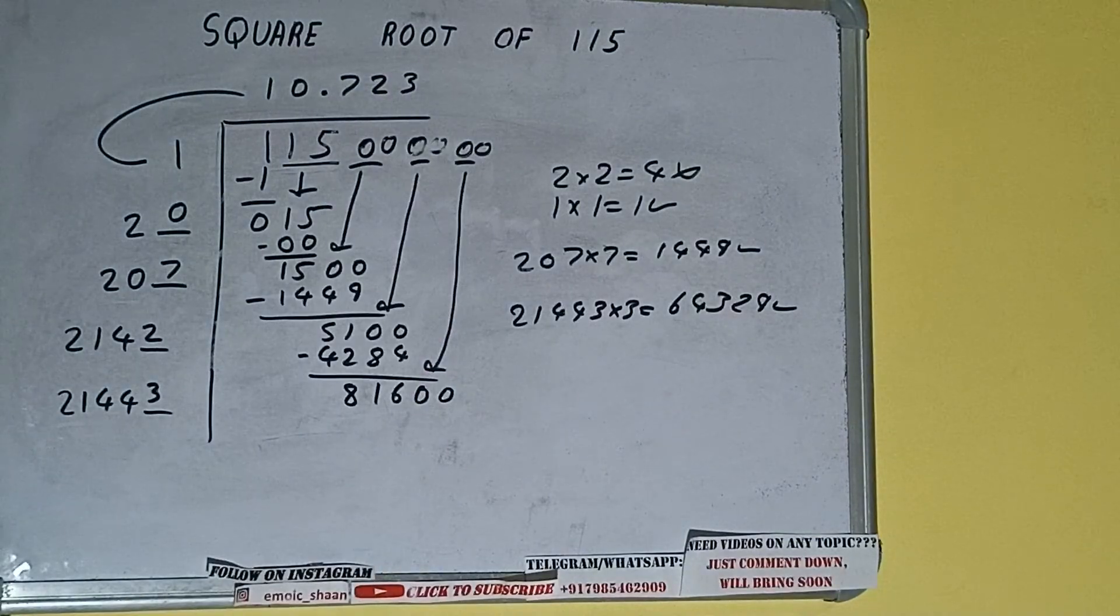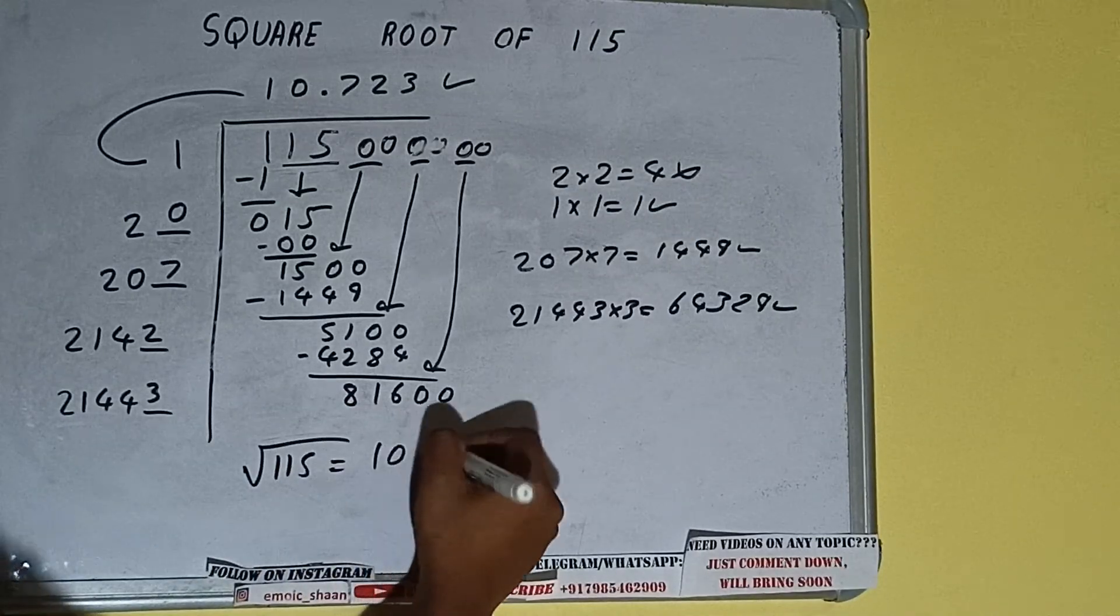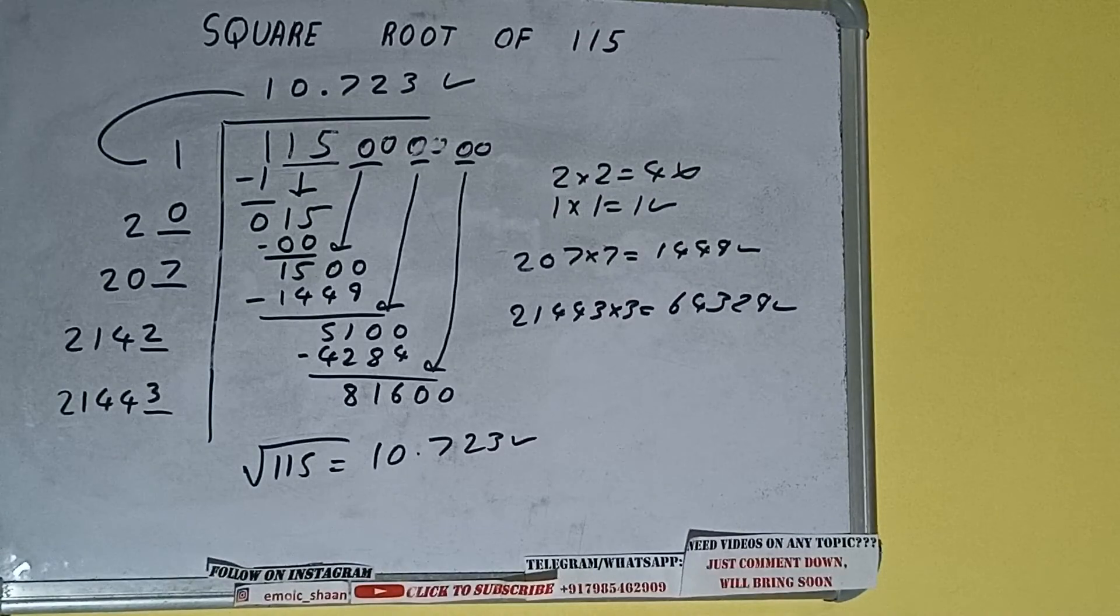But we don't need to calculate further because we got the answer correct up to 3 decimal places. So square root of 115 will be 10.723. That will be the answer. So this is all about square root of 115.